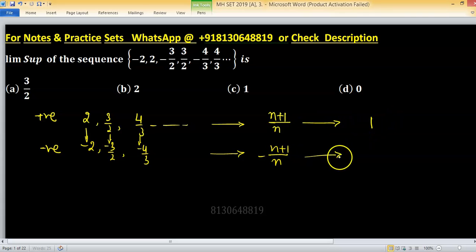So the set of limit points is 1 and minus 1. The limit superior of the given set is just the supremum of this one, and the supremum is 1.